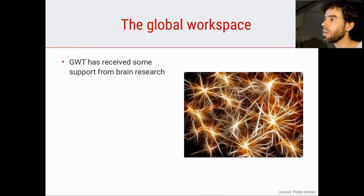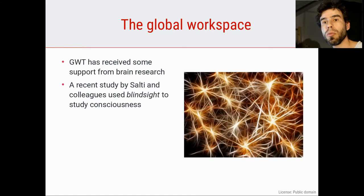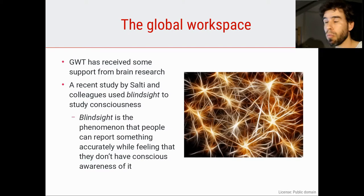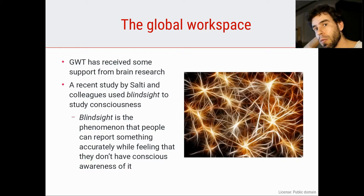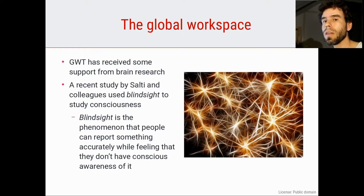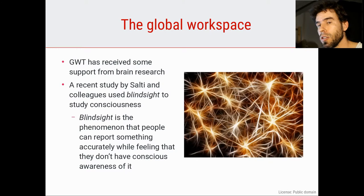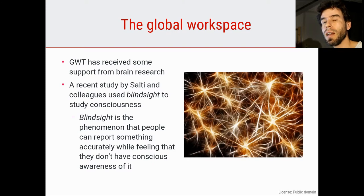The global workspace theory has received some support from brain research. I want to look in more detail at a study recently published by Salty and colleagues from Stan Dehaene's lab, who used blindsight to study consciousness. Blindsight is the phenomenon that people can report something quite accurately while feeling that they are not consciously aware of it. The term is mostly used in the context of people with brain damage — people who have damage to their visual cortex and claim that they are blind, that they cannot see anything. Yet they are nevertheless able to perform some visually guided actions and guess above chance where something is in front of them. Clearly some visual functions are remaining, but there is no visual awareness accompanying those visual functions — that's called blindsight.